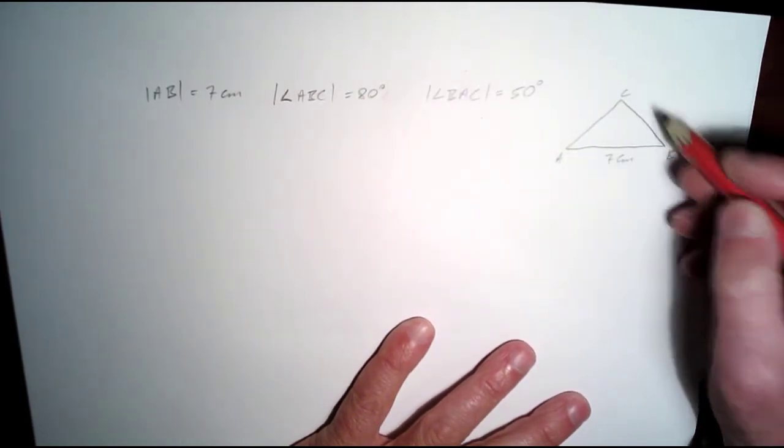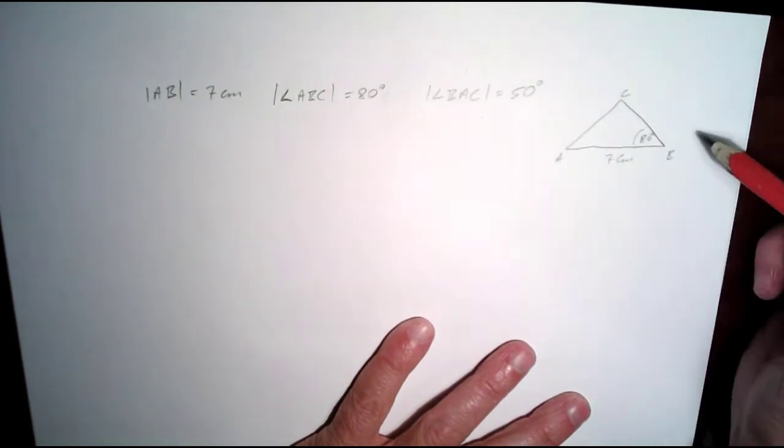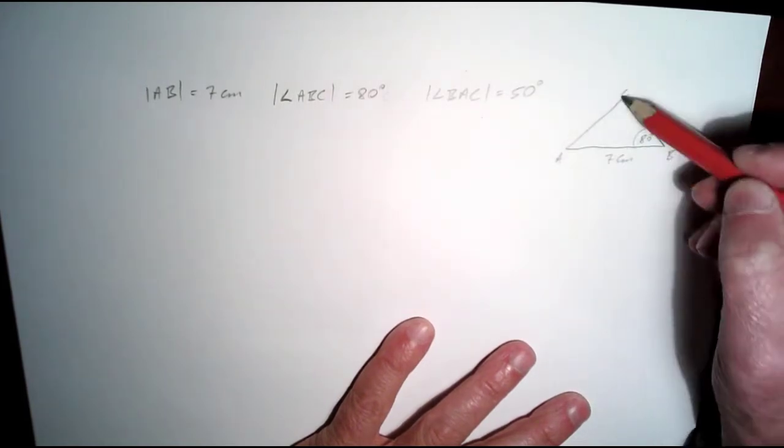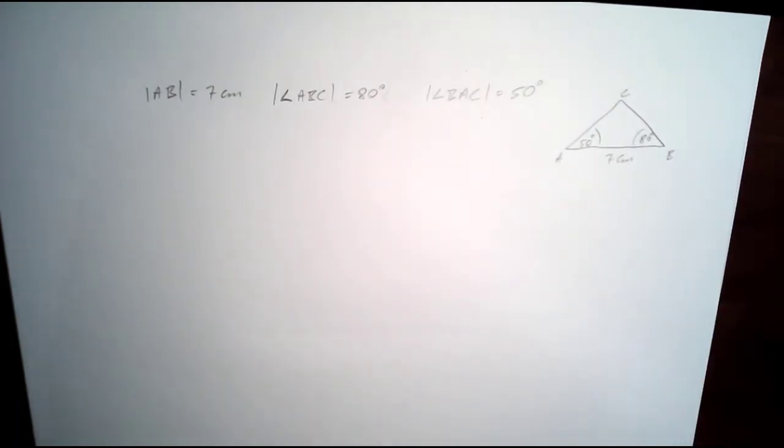So ABC, 80 degrees has to be here. And BAC is 50 degrees, so BAC, 50 degrees must go here. So that's what our triangle should look like.